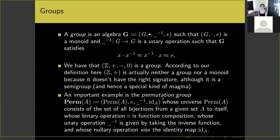An important example of a group is the permutation group Perm(A), whose universe consists of all bijections from a given set A to itself, whose binary operation is function composition, whose unary operation is taking the inverse function, and whose nullary operation is the identity map on A.